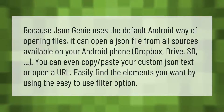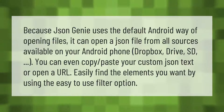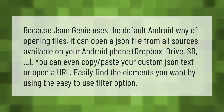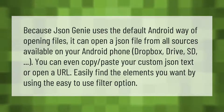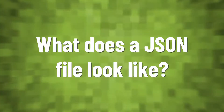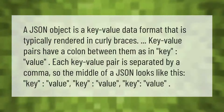JSON Genie uses the default Android way of opening files, so it can open a JSON file from all sources available on your Android phone — Dropbox, Drive, SD card. You can even copy-paste your custom JSON text or open a URL. Easily find the elements you want by using the easy-to-use filter option.